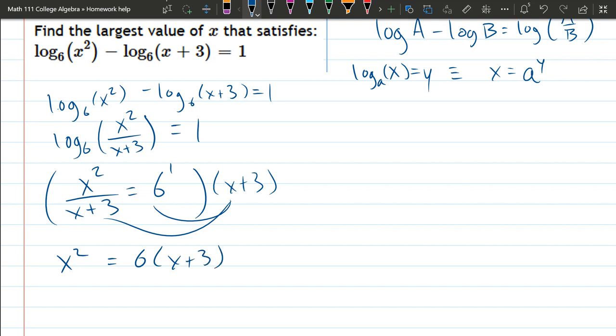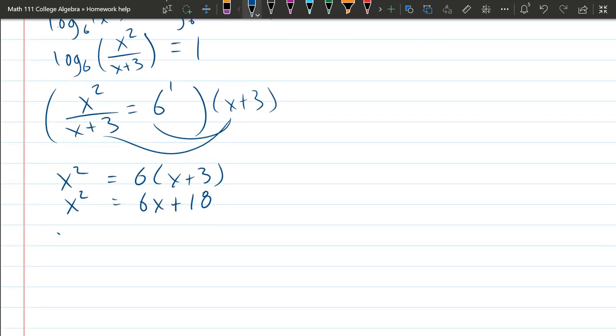We've got to collect all the x's on one side. I like my x squared terms to be positive, so I'm going to collect everything on the left. But first, we're going to distribute: 6x plus 6 times 3 is 18. And now we're going to subtract the 6x and the 18 to the left side, so we have 0 on the right. I call this solving the 0.